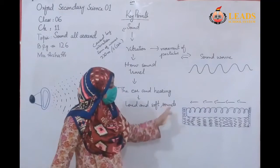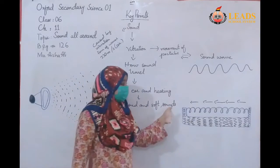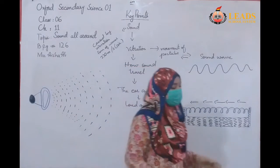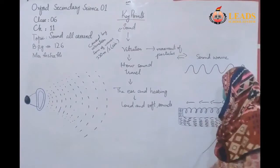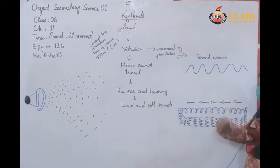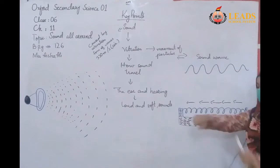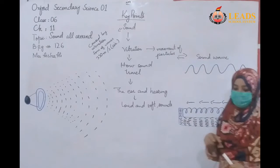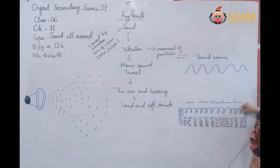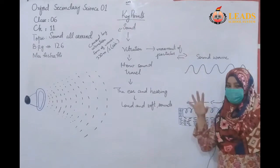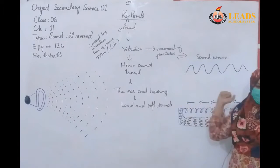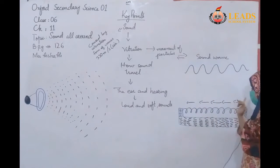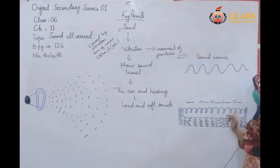For example, you can see this picture — it is a picture of a spring. When I have a spring, I roll it over and stretch it, then stretch and release it. You can see that there is vibration. This vibration is a form of energy, and from this we can see that the waves are traveling.